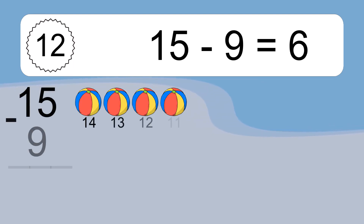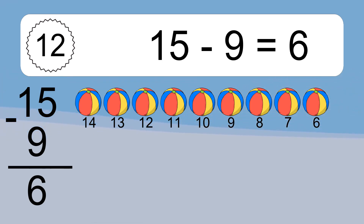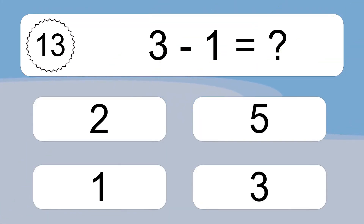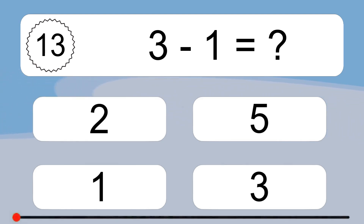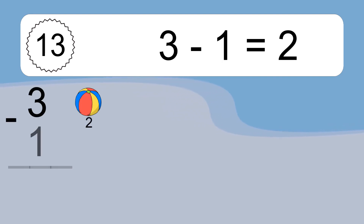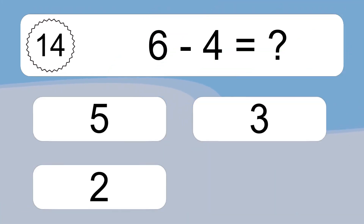15 minus 9 equals what? 15 minus 9 equals 6. Let's count it. 14, 13, 12, 11, 10, 9, 8, 7, 6. 3 minus 1 equals what? 3 minus 1 equals 2. Let's count it. 2.